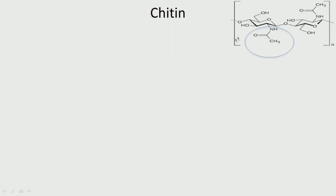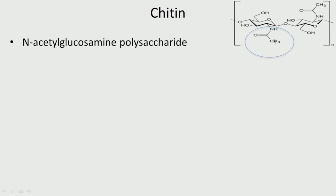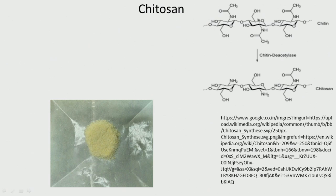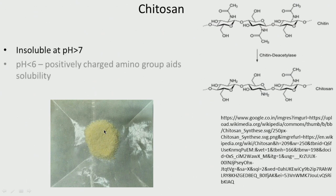Chitin has an acetyl group connected to the nitrogen amine — it is an N-acetyl glucosamine polysaccharide. It is most abundant next to cellulose and very useful. Then we have chitosan, which is produced from chitin by removing the acetyl group using a deacetylase enzyme, giving you NH2. Chitosan is highly water soluble, and depending on the degree of deacetylation, the solubility can be very high or very low, whereas chitin is not soluble. Chitosan is insoluble at pH greater than 7, but at pH less than 6, the positively charged amino groups increase its solubility.